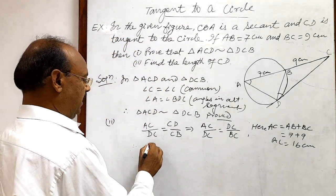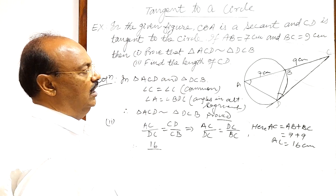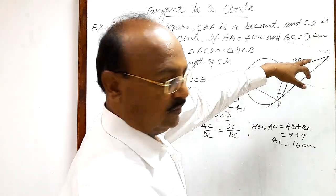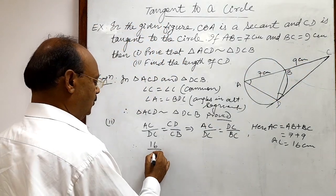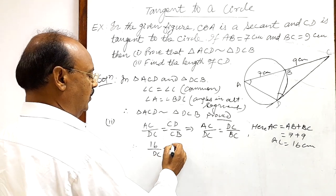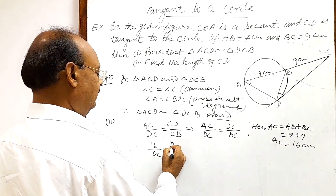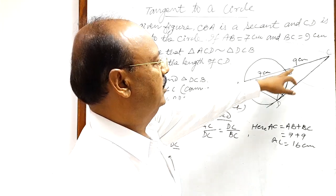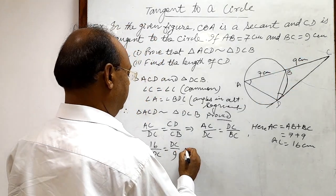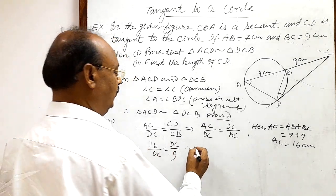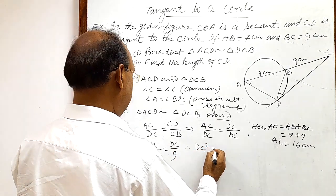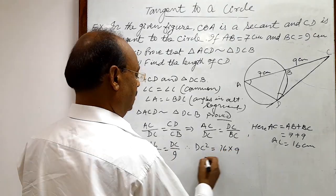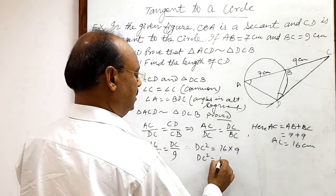So therefore we can write 16, and DC is how much? That we have to find out. So DC is equal to... CD is nothing but DC, and BC is how much? BC is already given, this is 9. And therefore by cross multiplication we can write DC² is equal to 16 × 9.